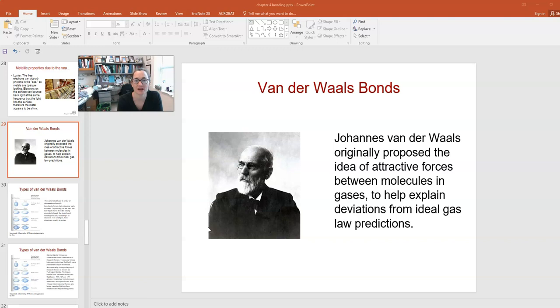These types of bonds were originally proposed by Johannes van der Waals to help explain the deviations of gases from the ideal gas law. It was his theory that as you chill down an ideal gas, the molecules get slower. So if they get close to another molecule, they'll spend more time there. And in that longer time, they can induce dipoles within each other that causes them to feel an attractive force. So that was the origin of all these ideas.